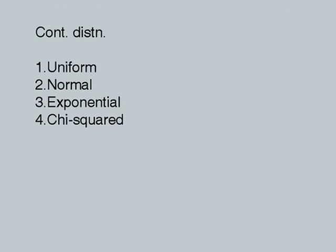So far in continuous distributions we have seen the uniform distribution, the normal distribution, the exponential distribution, and the chi-square distribution. We would now try to apply these distributions in real life. The whole objective is to derive information about a population based on a small sample.